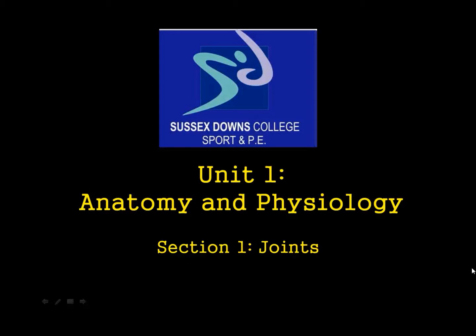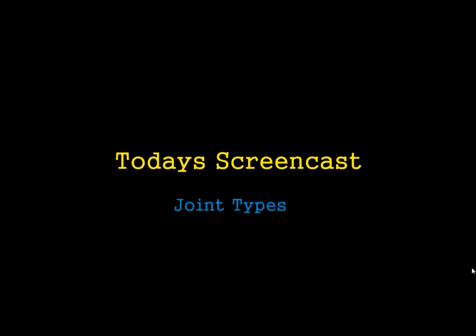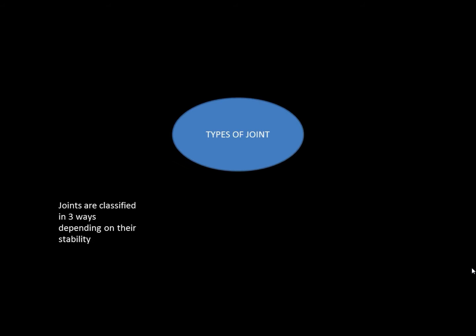Unit 1, Anatomy and Physiology, Section 1: Joints. Today's screencast is looking at the different types of joints available in the human body. There are three different types of joint, and they are classified depending on how stable the joint is.